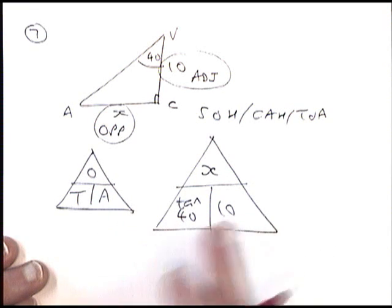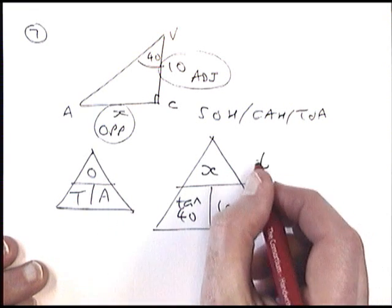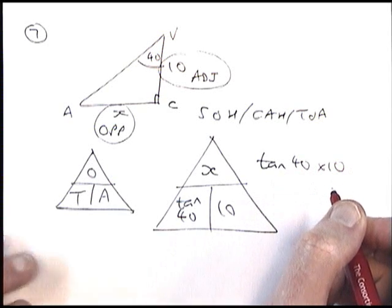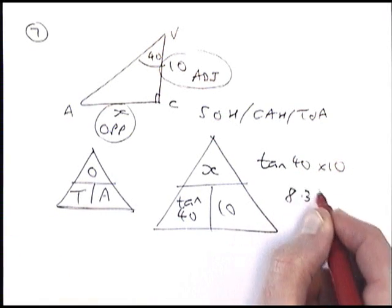I've got a number in both of the bottom bits, so I multiply together. I need to do tan 40 multiplied by 10. And if I do that, I get 8.39.